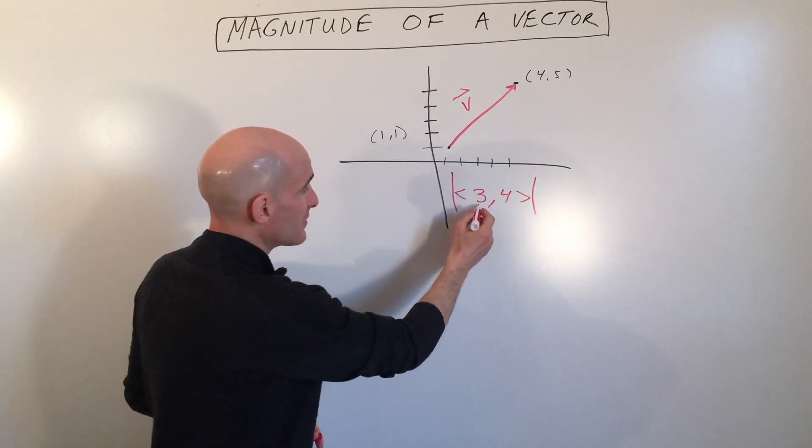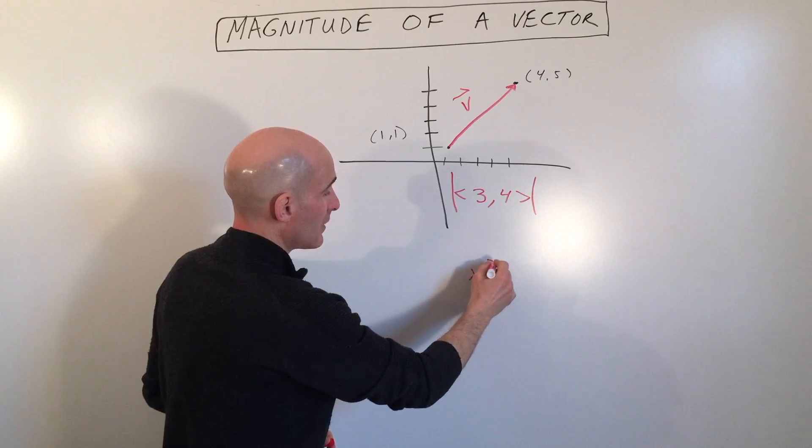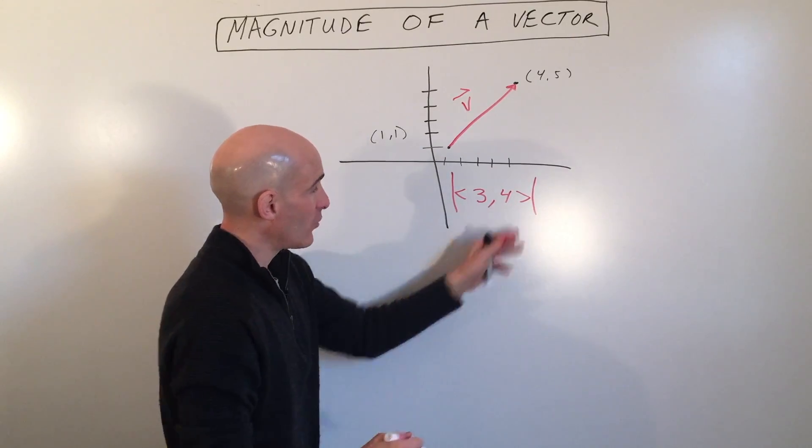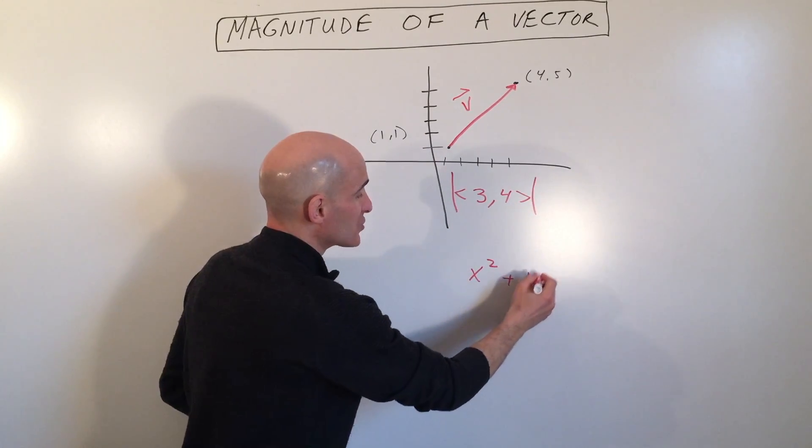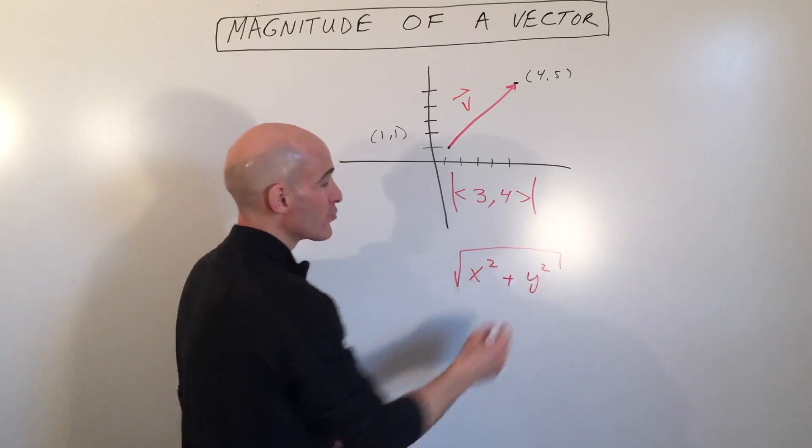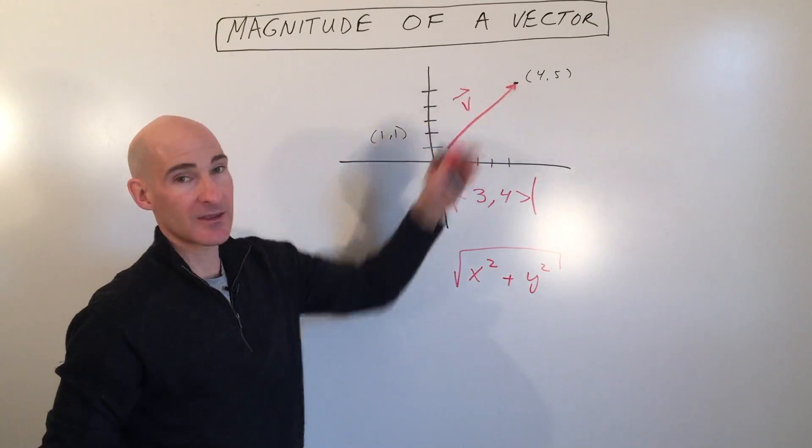What you do is you take this x component, you square it, you take the y component, you square it, you add them together, and you take the square root, and that'll give you the length of the vector.